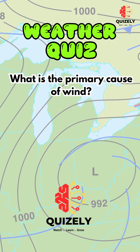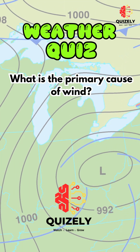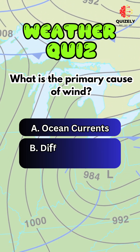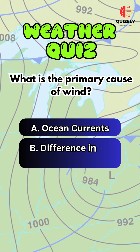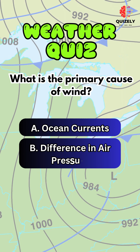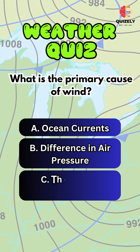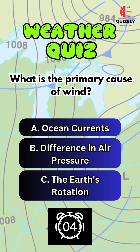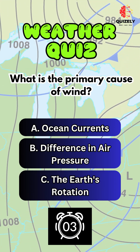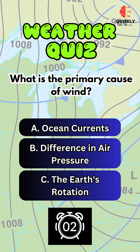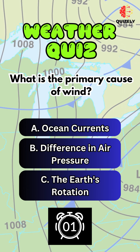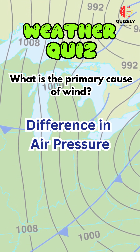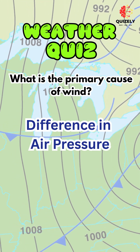What is the primary cause of wind? A. Ocean currents. B. Difference in air pressure. C. The Earth's rotation. Correct answer is difference in air pressure.